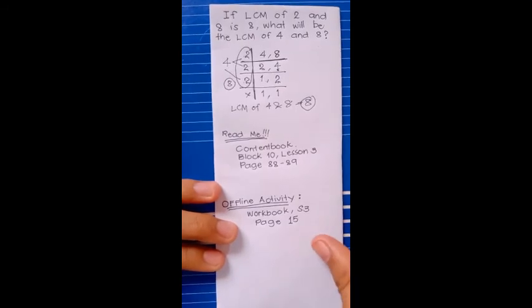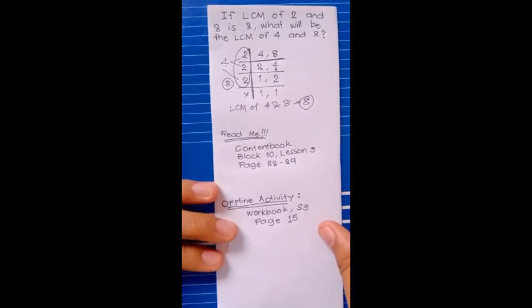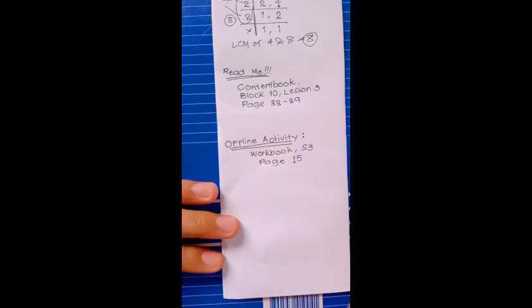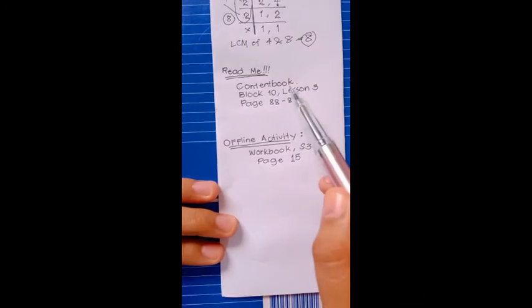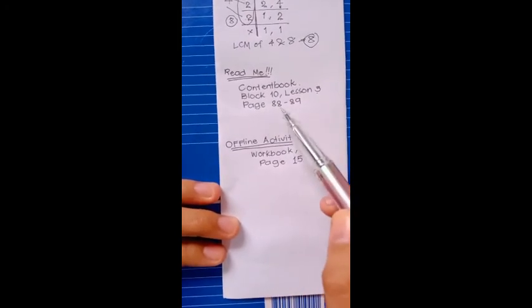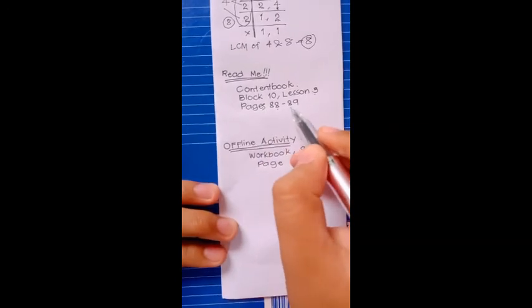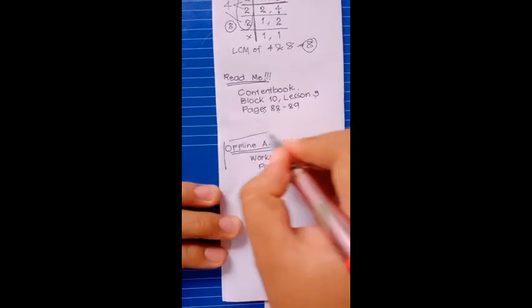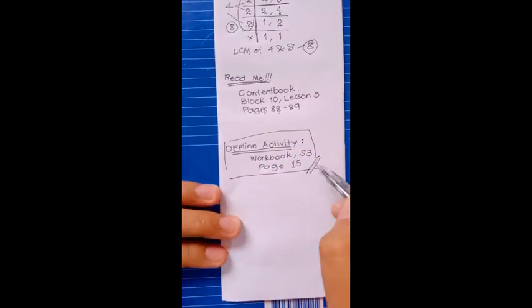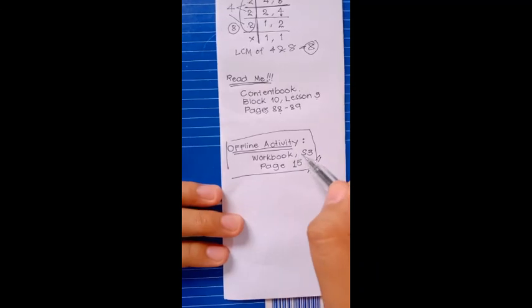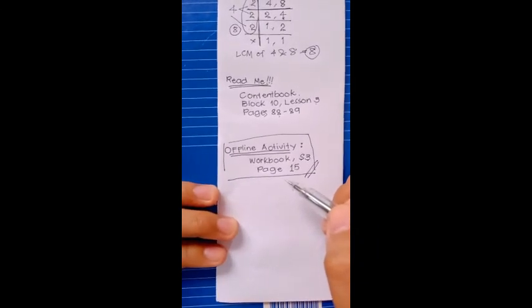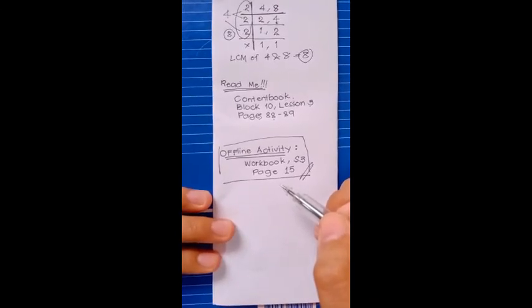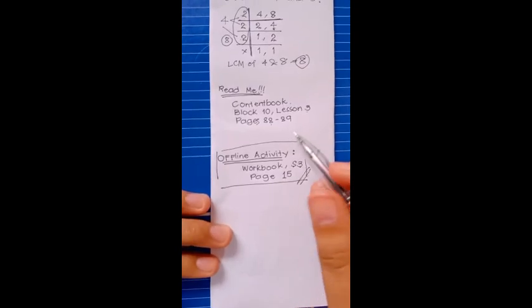Now that you know how to find the LCM of 2 numbers, I want you to read your content book, Block 10 Lesson 3, pages 88 to 89. Then do not forget to do your activity — Workbook Seat Work Number 3, page 15. Please recheck your work before sending it in our Google Classroom. That would be all for today. Adios!